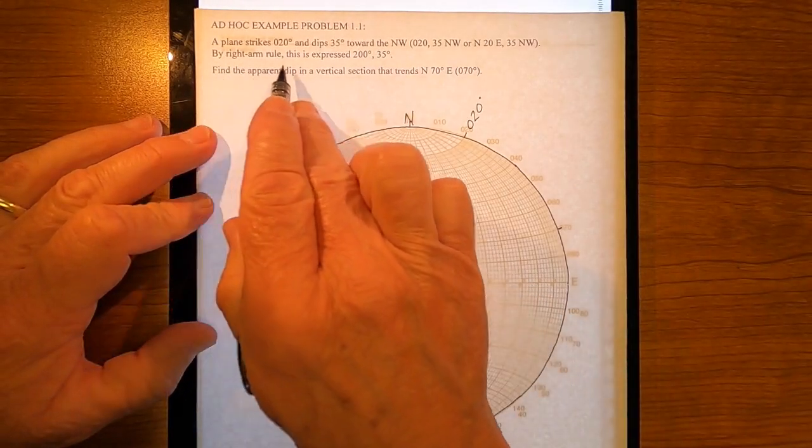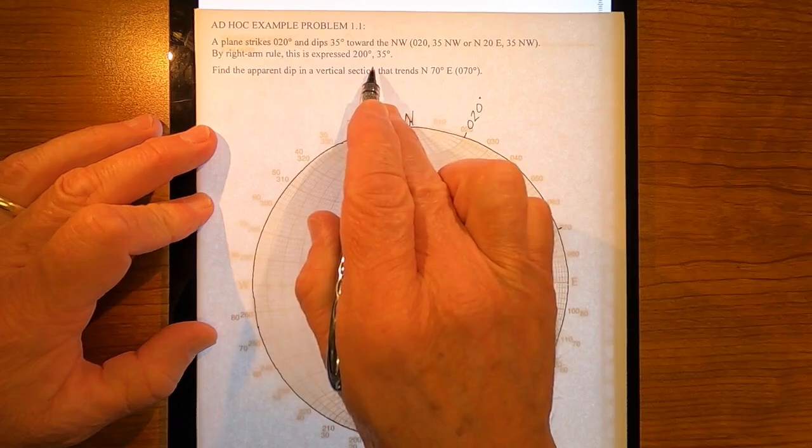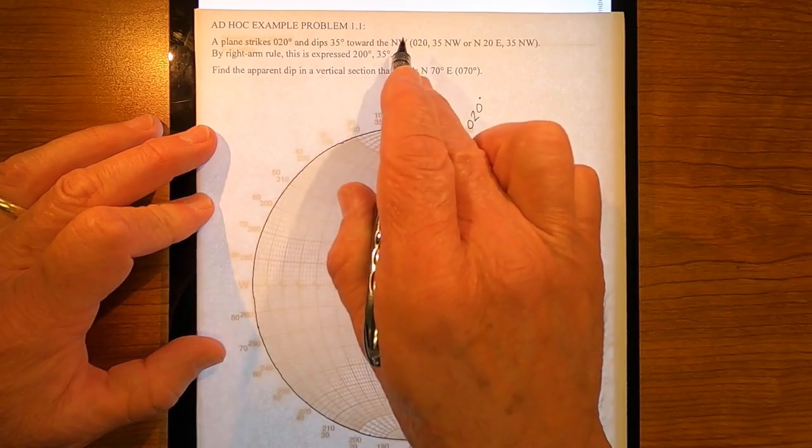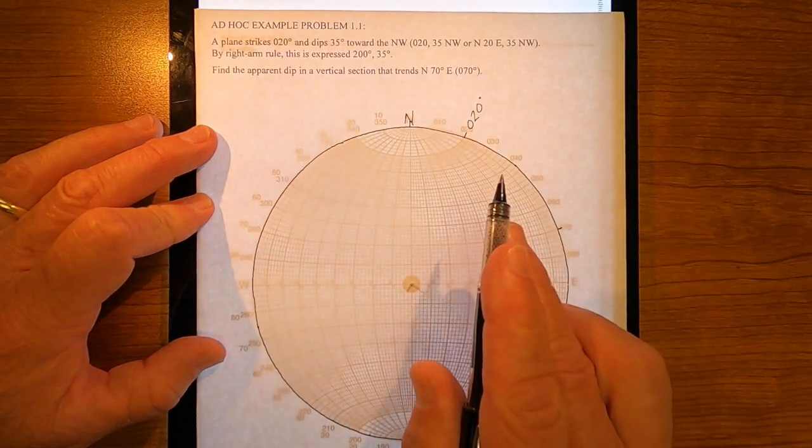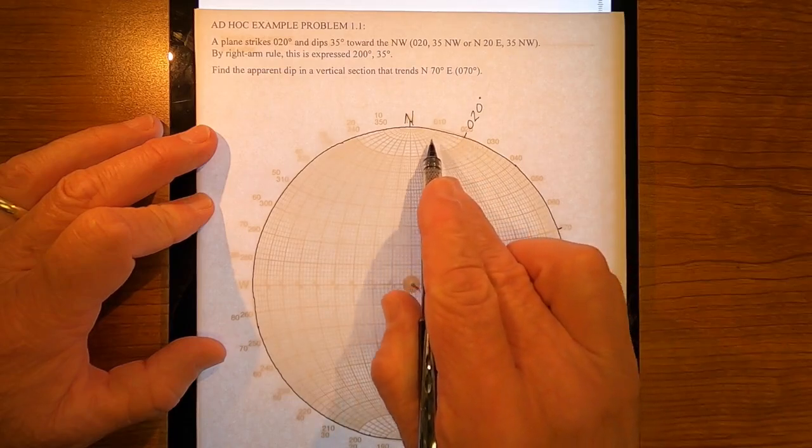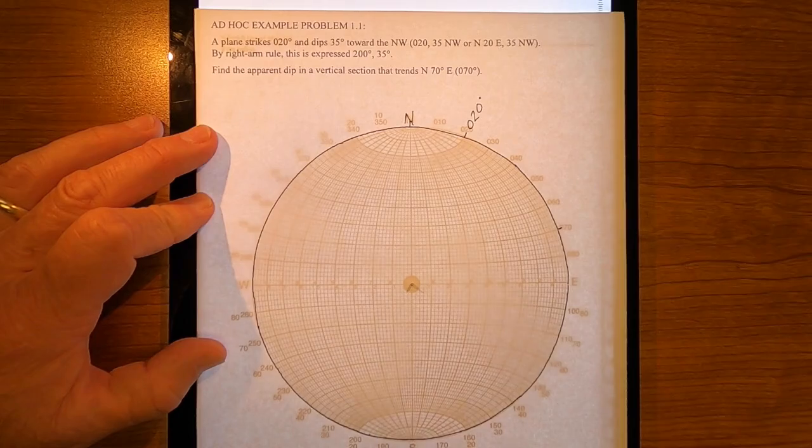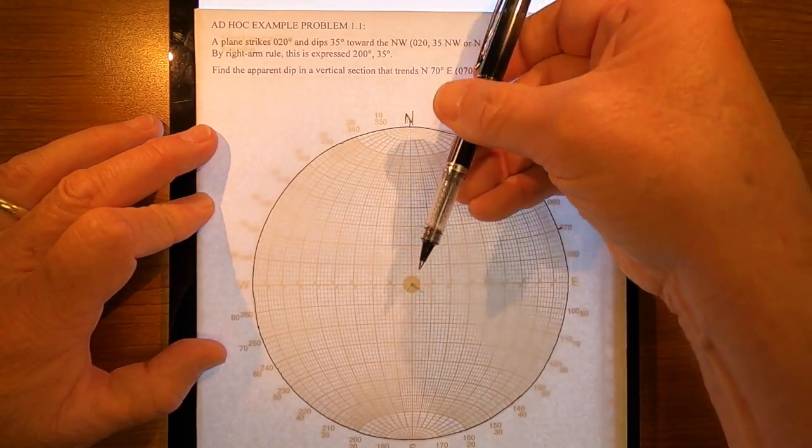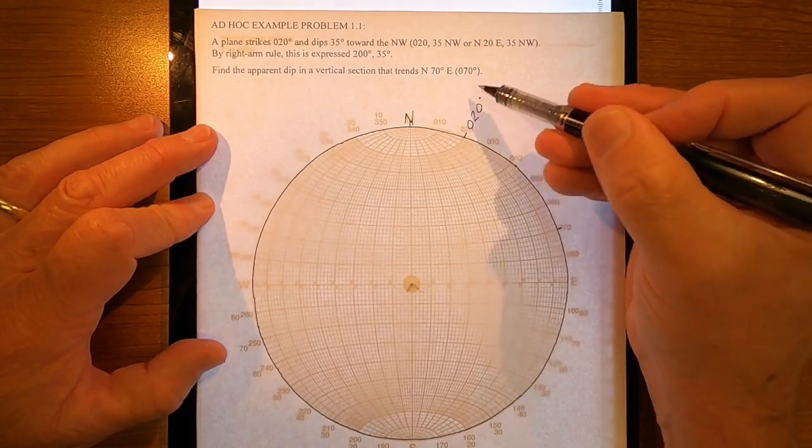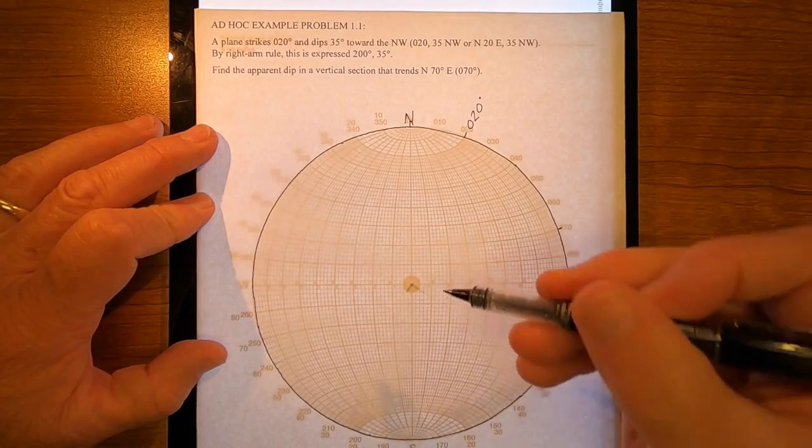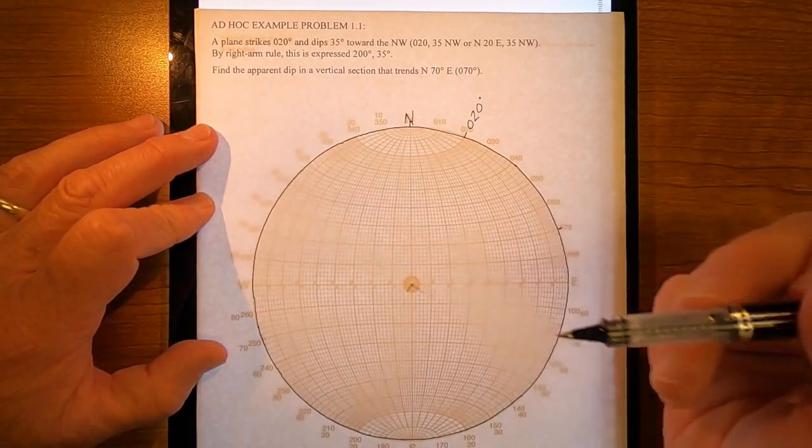By right arm rule, in this case, it's two zero zero, thirty-five. And that's because this dips to the northwest. So the great circle representing this plane is going to be over this way. And by right arm rule, I have to face the back azimuth of zero seven zero. I have to face two zero zero for my right arm to point off to the northwest.